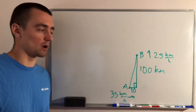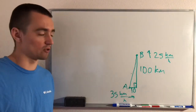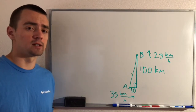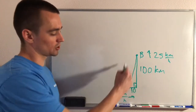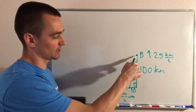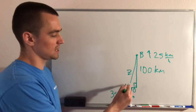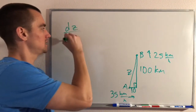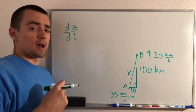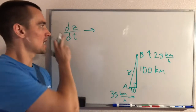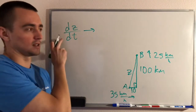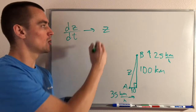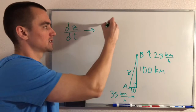Now step two of any related rates problem is to come up with your equation, which we'll later find the derivative of. The question asks us to find how quickly the distance between the two ships is changing. That distance is represented by the hypotenuse — let's call it Z. What we're looking for is dZ/dt, the derivative of Z with respect to time. Our equation should not yet contain any derivatives, but it must contain Z so that when we differentiate, we get a dZ/dt.